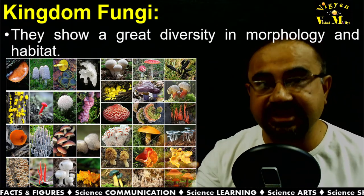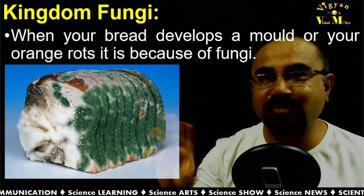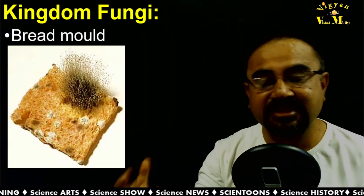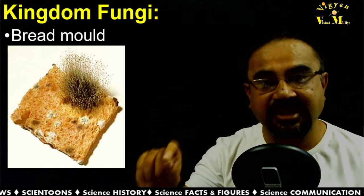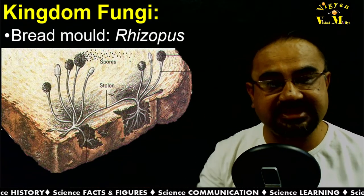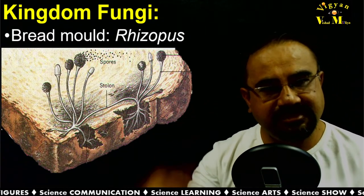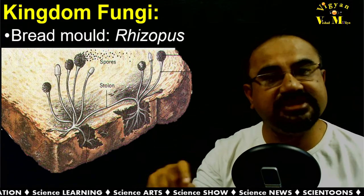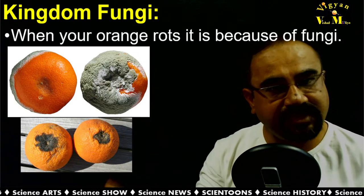Fungi constitute a unique kingdom of heterotrophic organisms showing great diversity in their morphology as well as in their habitats. When you see bread which has mold, or oranges rotting, it is because of fungi. Looking at bread mold in detail at the microscopic level, we can see Rhizopus — with its mycelium as well as spore-forming parts. The rotting of oranges is also because of fungi.